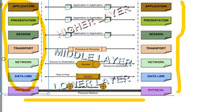Transport and Network layers are called middle layers — they work process to process. Network layer works on the router layer. Data Link works on switches. Physical layer uses hubs and repeaters. Data Link and Physical are the lower layers.